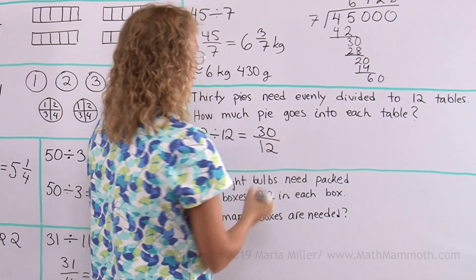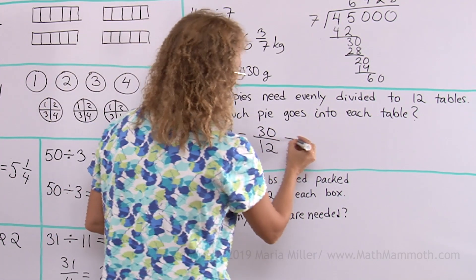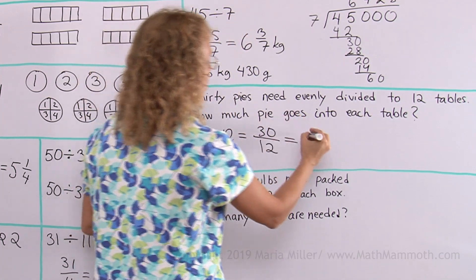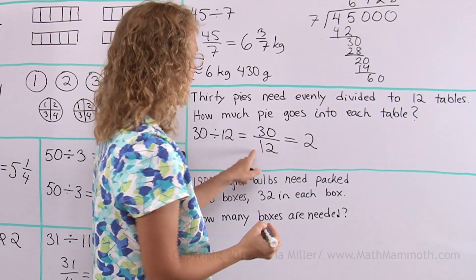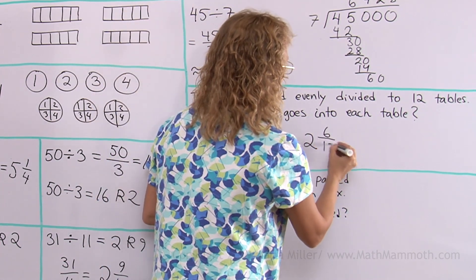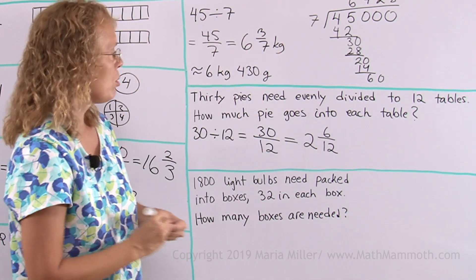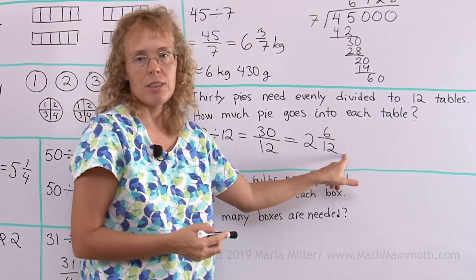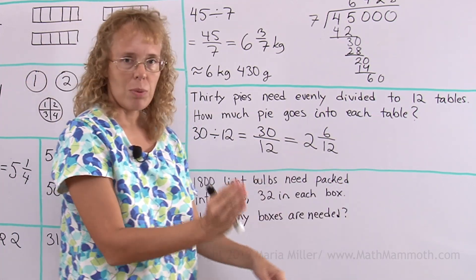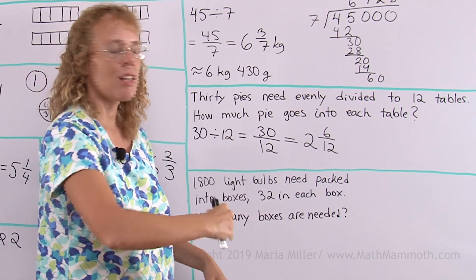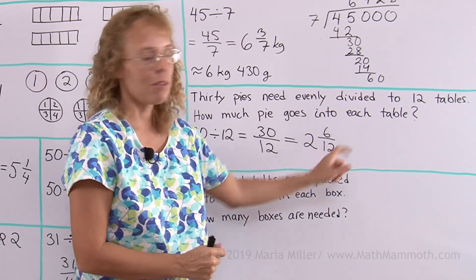So I will write it as a fraction, 30 twelfths. And then it's a mixed number, 12 goes to 30 two times. And then, that's 24, so there's six twelfths left over. Into each table goes two whole pies and then six twelfths of a pie. Or two and a half pies. Or you can think of it, if each pie is divided into 12 slices, then six slices out of twelve.